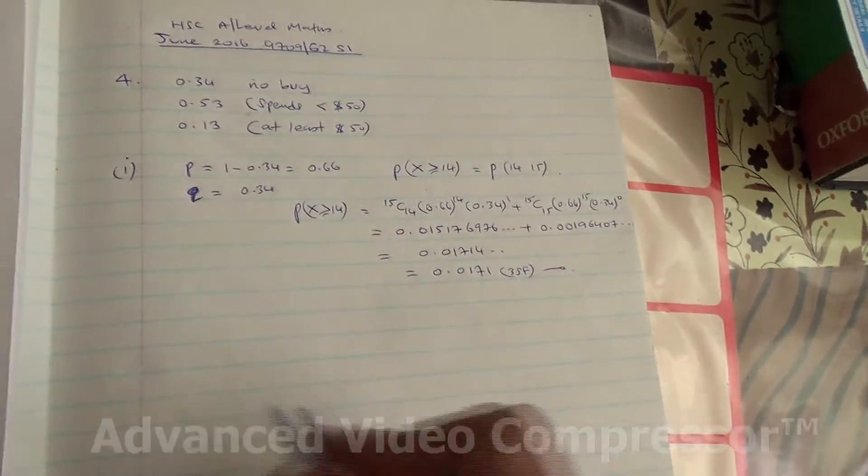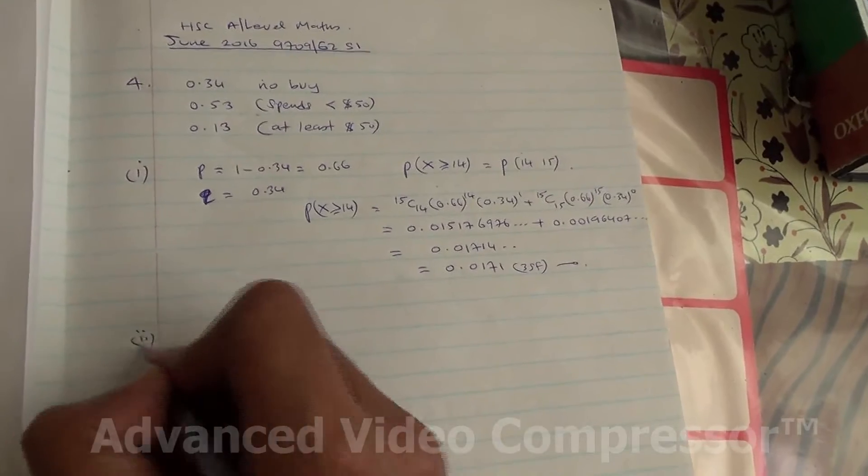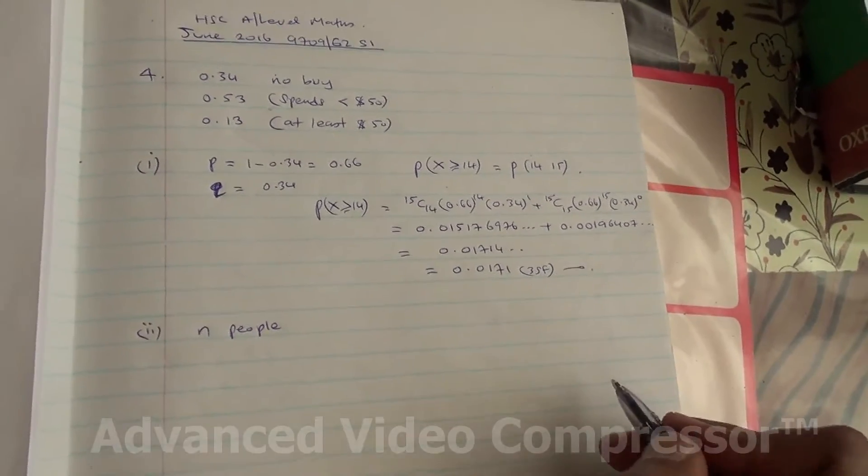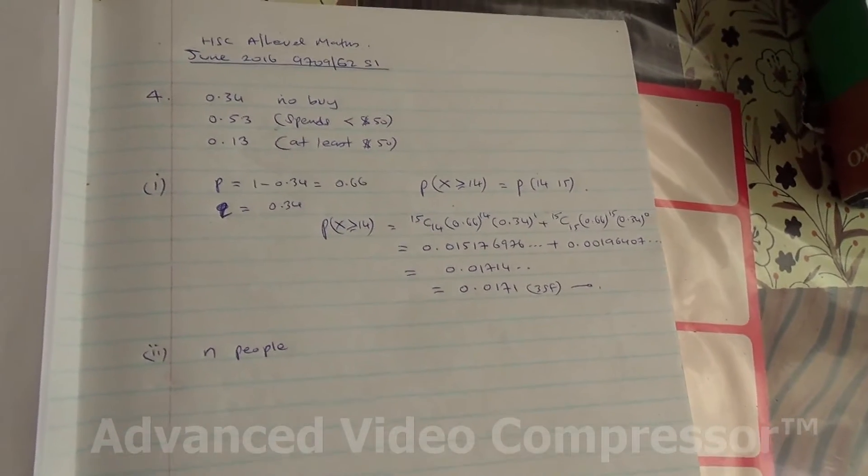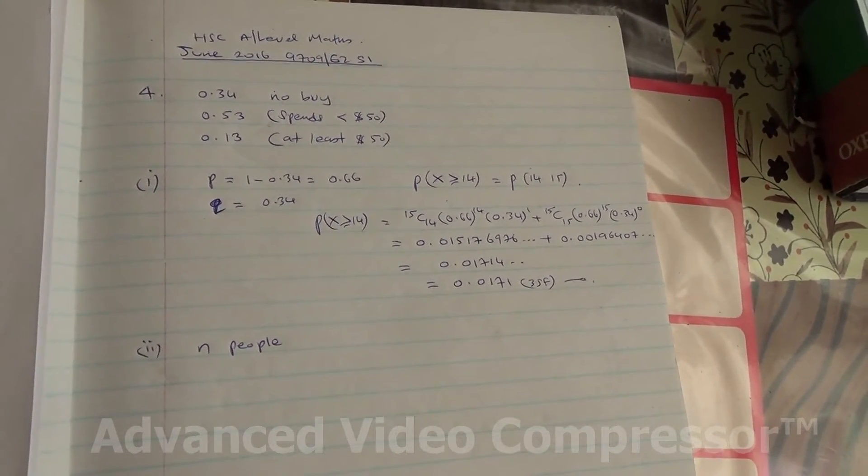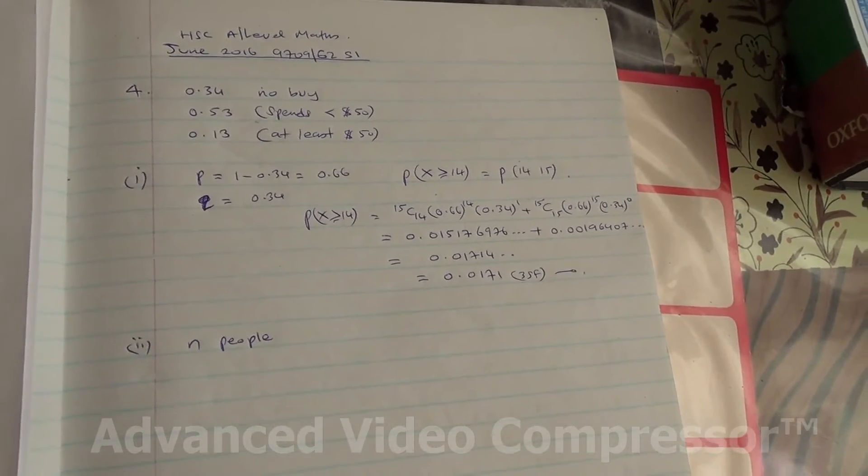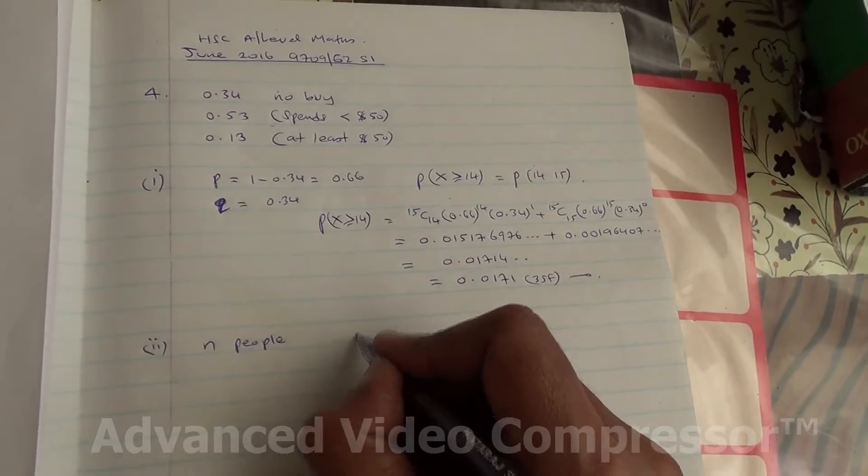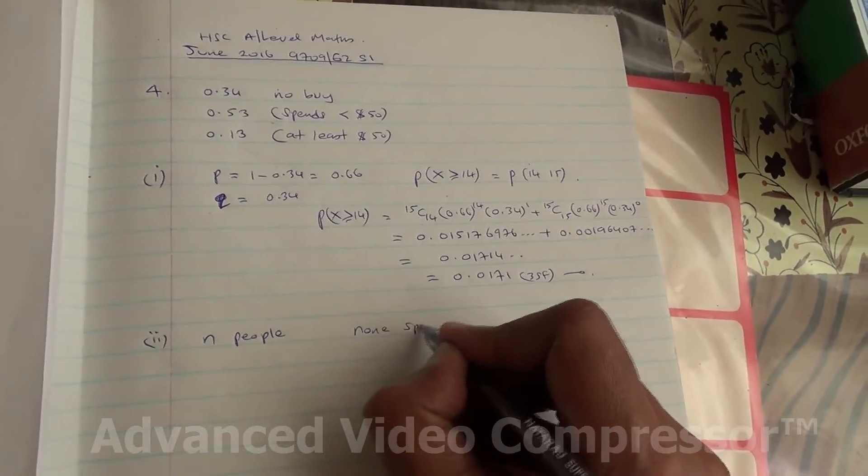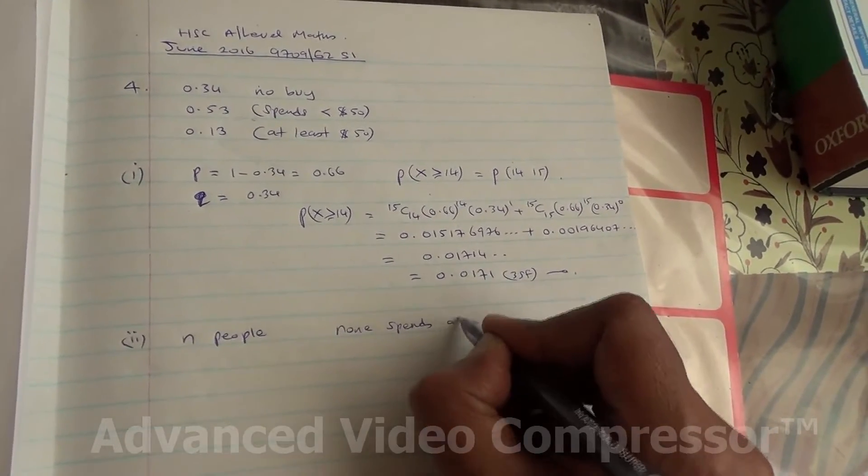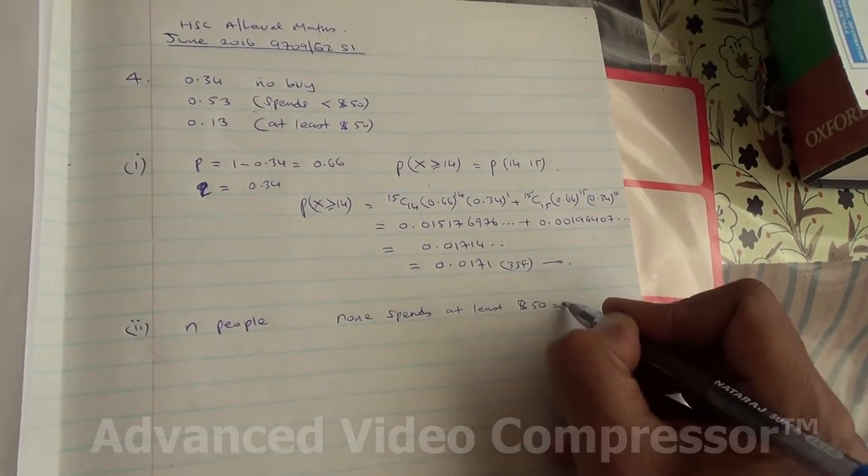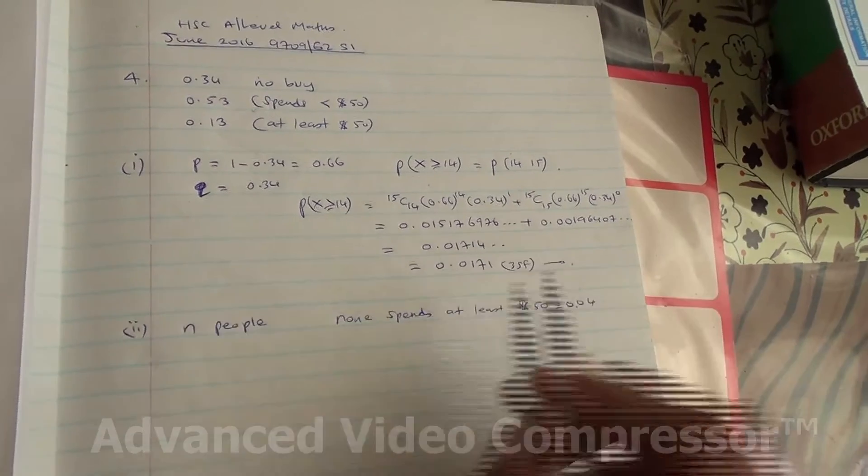So, the answer to 3 significant figures is going to be 0.0171. Now, N people going to the shop. We need to find the probability that none of them spends at least $50. None spend at least $50 is 0.04.